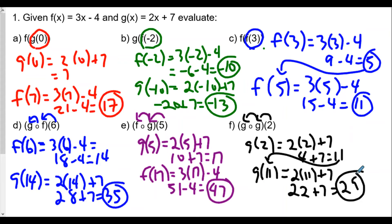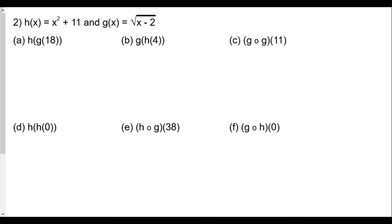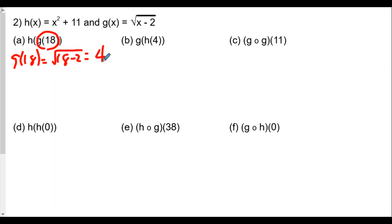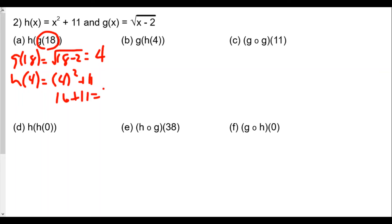Now let's continue with the next question. We have h of x equals x squared plus 11, and g of x equals the square root of x minus 2. For the first part, we find g of 18. So g of 18 equals the square root of 18 minus 2, which is the square root of 16, equal to 4. Now we find h of 4, since that result goes into h. h of 4 is 4 squared plus 11, which is 16 plus 11, or 27.